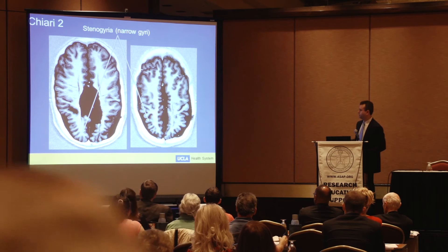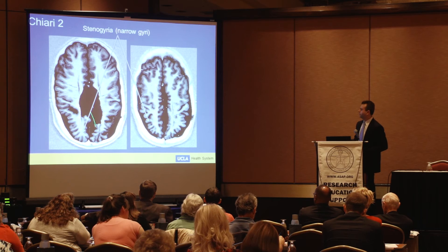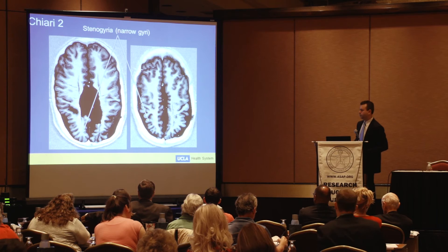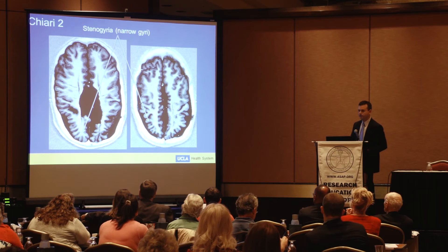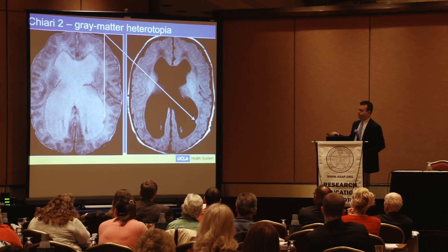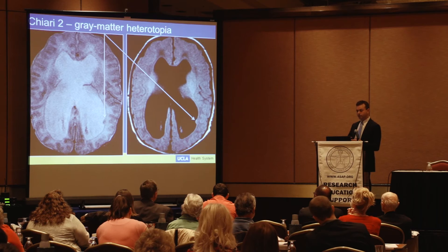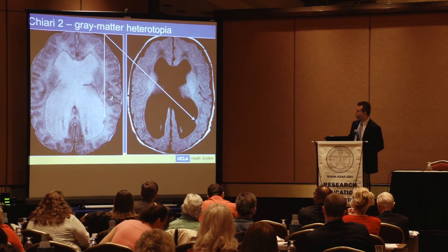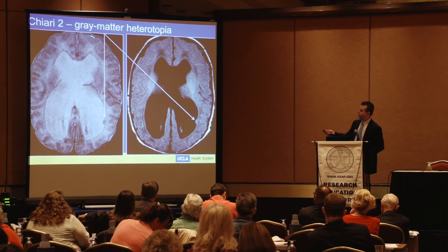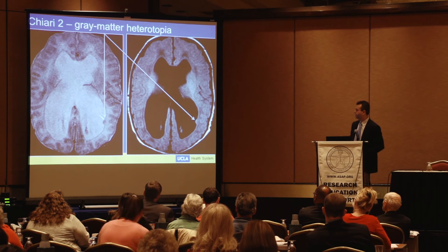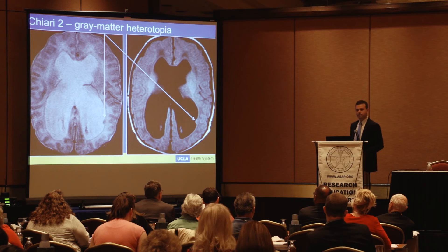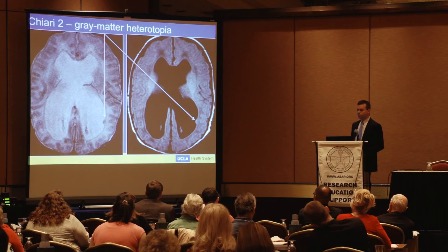Getting into more serious consequences of Chiari 2: because this is a disease of neural development, not just segmentation, we see abnormal cerebral gyri. Here we have normal gyri in the front, but in the back you have very abnormal-looking cerebral gyri — this is called stenogyria, or narrow gyri. In probably the most severe manifestation of Chiari 2, we can see gray matter heterotopia. During development, gray matter starts near the ventricle and migrates outward; sometimes this migration stops and a bit of gray matter gets stuck near the ventricles. This can cause very severe seizure disorders, completely overshadowing all other Chiari symptoms.